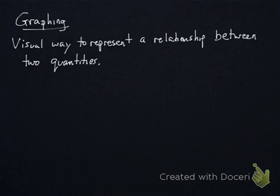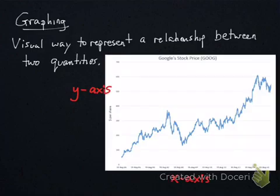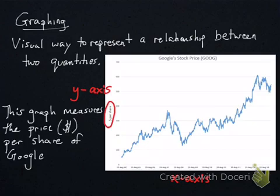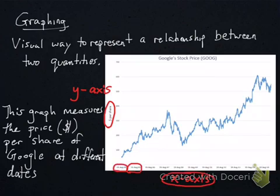So probably the most common way that you're going to see graphs is if you follow the stock market. This one in particular shows Google's stock price. Now I say graphing is a way to represent a relationship between two quantities. So what are these two quantities? Well, we're measuring the price per share of Google at different dates. So those are the two quantities, the price and the times. And this visual shows how those are represented.